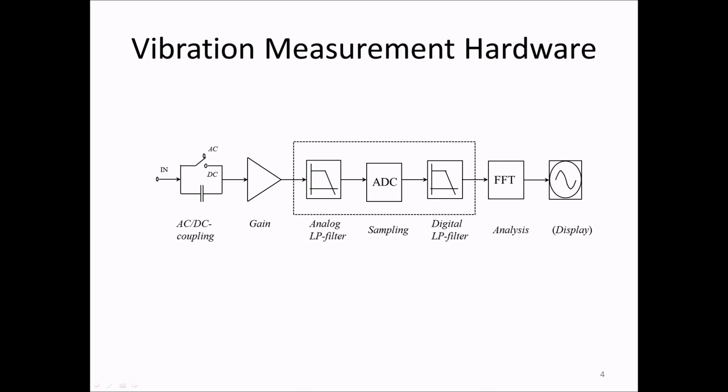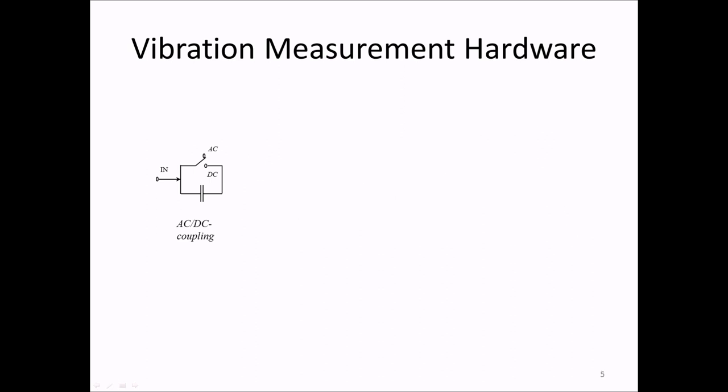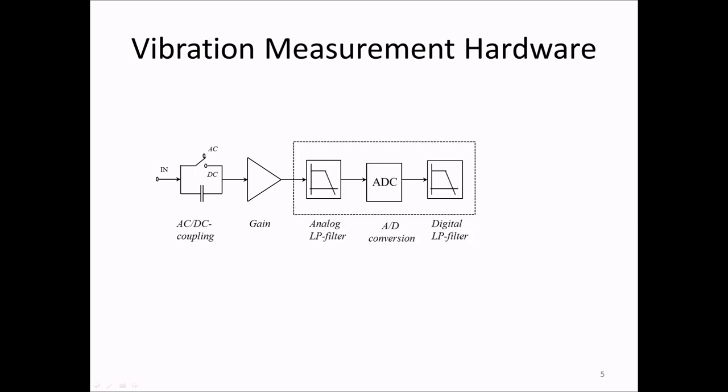All systems for noise and vibration measurements consist of the following key parts. First there is an AC-DC switch, which you can usually control from the software. After that, there is a gain adjustment in most instruments. Then follows an analog anti-aliasing filter, the analog-to-digital converter (ADC), and a digital filter.